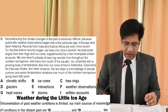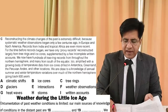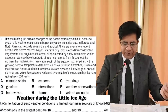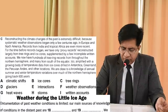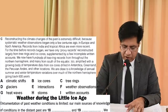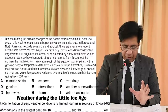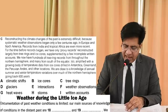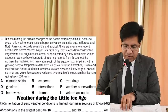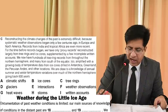Please come to paragraph C: 'Reconstructing the climate changes of the past is extremely difficult because systematic weather observations began only a few centuries ago in Europe and North America. Records from India and tropical Africa are even more recent. For the time before records began, we have only the proxy records, reconstructed largely from tree rings and ice cores.' Now come back — distant past: tree rings and ice cores.